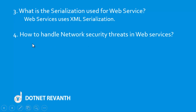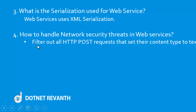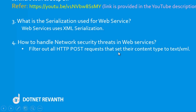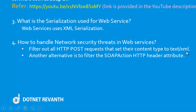Fourth question: How do you handle network security threats in web services? The first step is to filter out all HTTP POST requests that set their content type to text or XML. Another alternative is to filter the SOAP action HTTP header attribute.